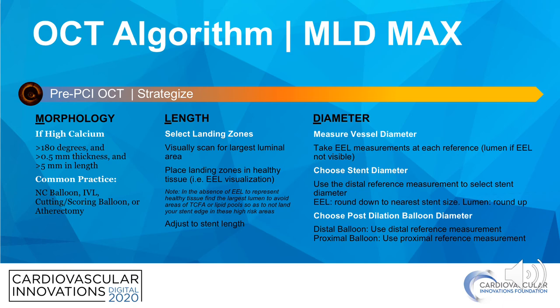We determine high calcium based on the CVI score, or calcium volume index, which can be remembered by the rule of fives. If more than 50% of the arc has calcium — greater than 180 degrees — and the calcium thickness is greater than 0.5 millimeters (something that can only be measured on OCT), and if the calcium length extends for five millimeters or more, there is a high degree of calcium that is unlikely to allow adequate stent expansion without lesion preparation prior to stent implantation.